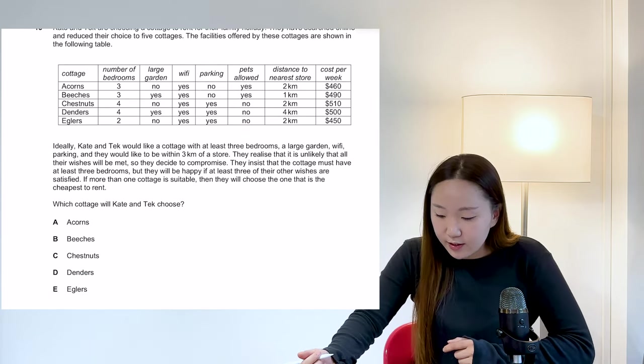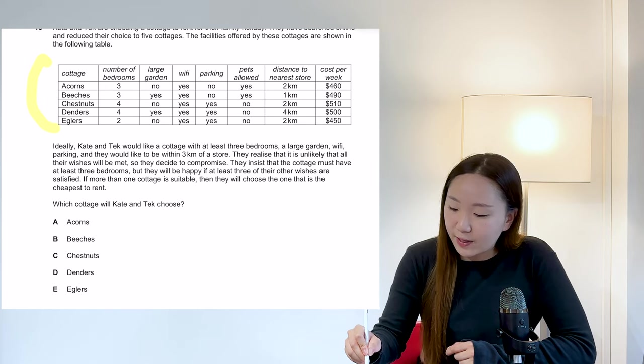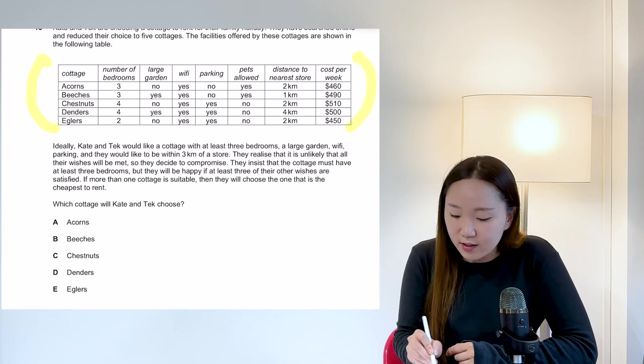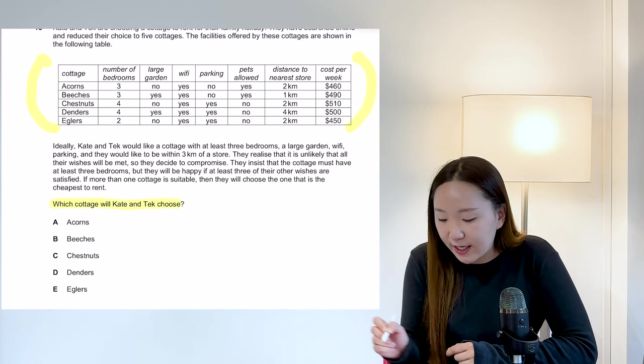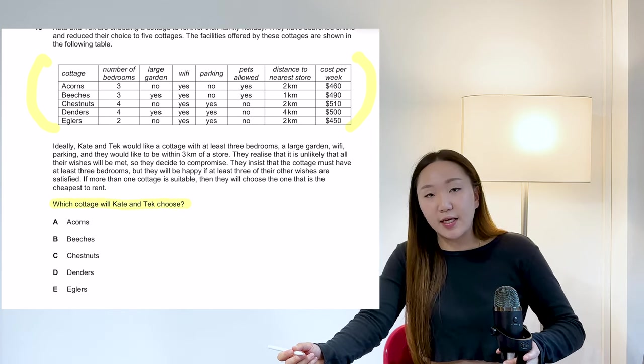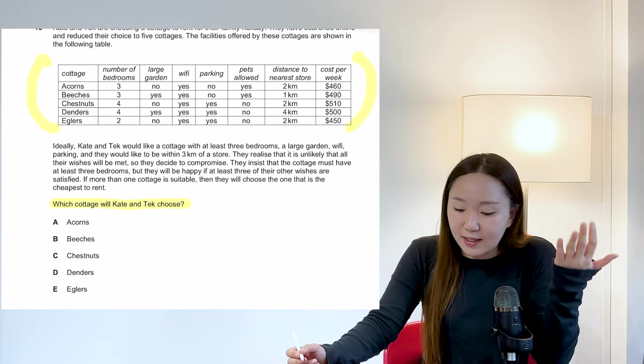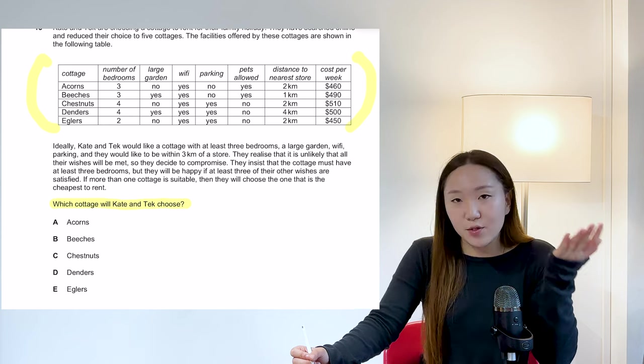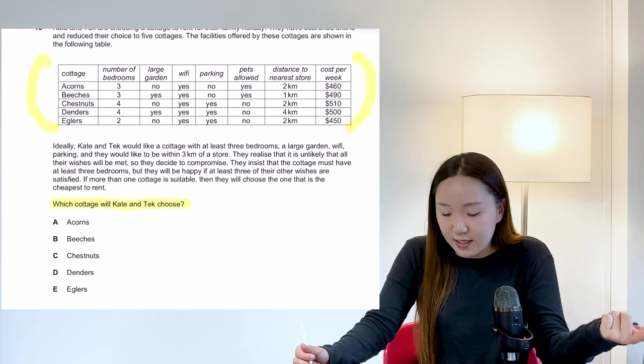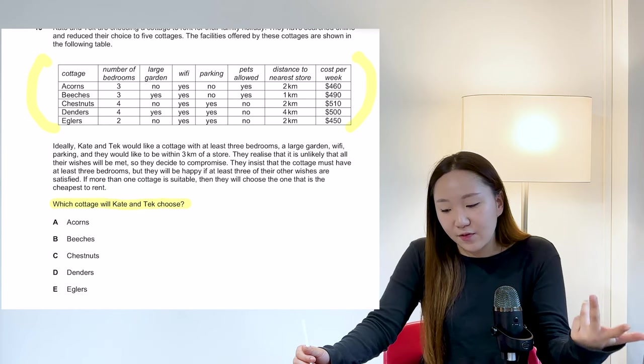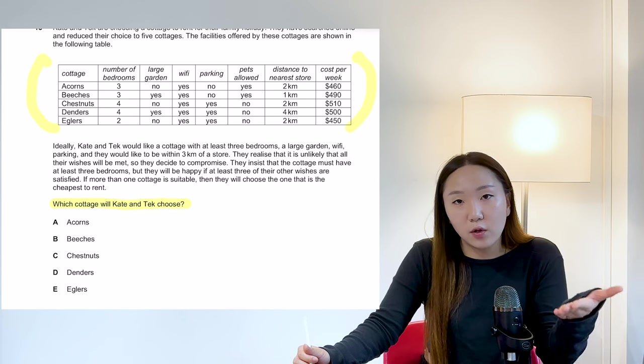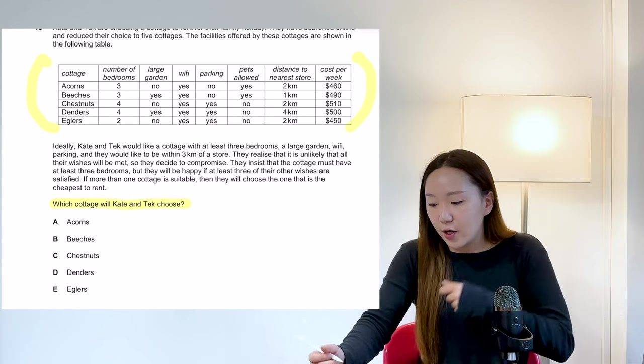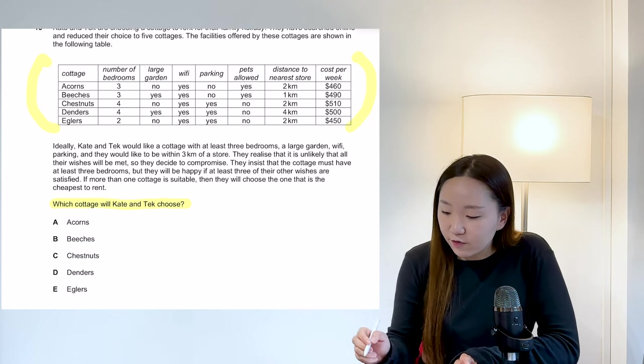Okay, in this question, this is a classic, they give you loads of information and you have to knock out one by one until you find, in this case, which cottage will Kate and Tech choose. So they give you a series of conditions and then you have to choose which one fits the requirements best. Now again, super common question, very repetitive. I would say these ones it's difficult to get wrong. The only thing that you want to avoid is spending too long on this question. So just a quick tip for you.